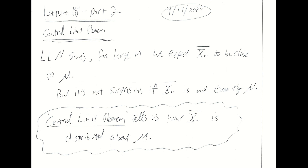We just concluded our discussion of the law of large numbers, which says that if you have a large sample size, you expect your sample mean to be close to your population mean. But it doesn't surprise us if the sample mean is not exactly equal to the population mean. You could flip a coin seven times, see four heads, and get a sample mean of four over seven — that's not exactly one-half, but it's reasonable. It wouldn't be surprising to flip a coin a thousand times and see 501 heads. But it would be surprising to flip a fair coin a thousand times and see 999 heads.